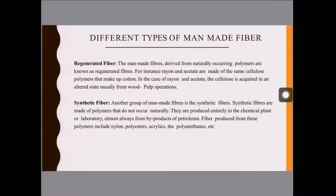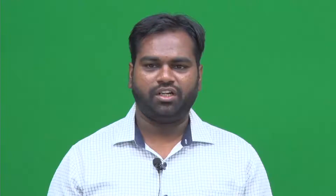Man-made fibers are classified into regenerated and synthetic types. Regenerated fibers are made from naturally occurring polymers — for example, rayon and acetate, which are made from cellulose. Synthetic fibers are manufactured through synthetic synthesis, such as polyester, polyamide, nylon 6, and nylon 66.